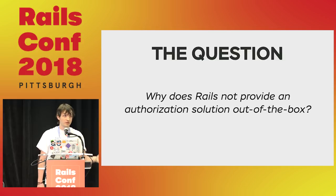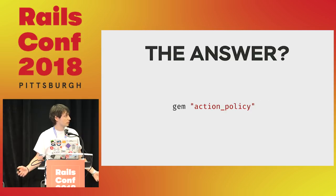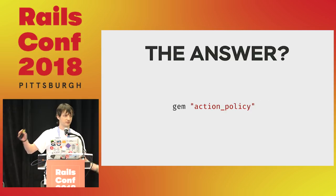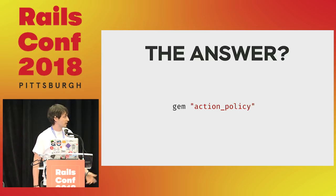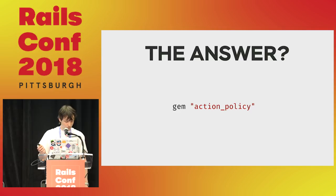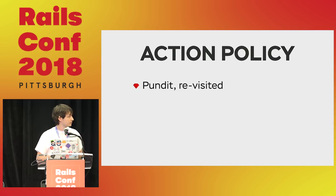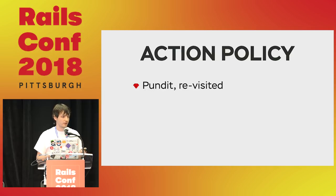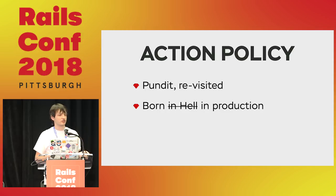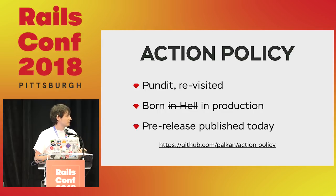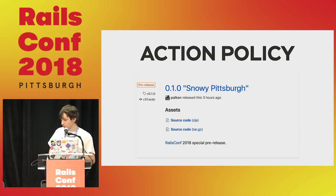Thinking about this question, I ended up with a good title for a new gem, and I call it Action Policy — because we're in Rails, so 'action' or 'active' as the first part of the framework name. Introducing a new gem: it's based on Pundit in terms of conception, we use the same policy objects, but we rewrite all the internals. It's born in production — it's an extraction gem — and it has been released today. Actually a pre-release; I haven't finished everything to be wrapped into a gem, so that's a special pre-release for RailsConf.